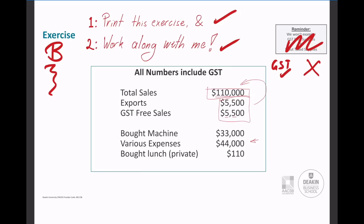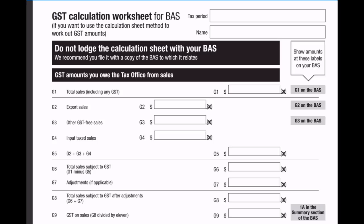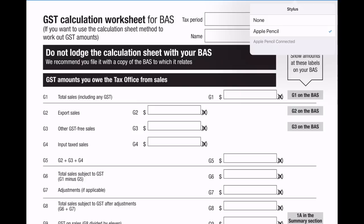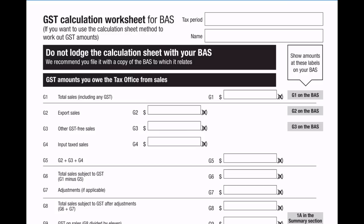So first thing we're going to do is the sales. This part here is going to tell us how much GST we owe the government - this will be a liability. The other part is GST paid: in other words, when we bought stuff and paid for it, we will have an asset called GST paid. Let's fill it out. Total sales: 110. Exports and GST free sales were both $5,500. So pretty easy. First thing we need to do is write ourselves a little note.